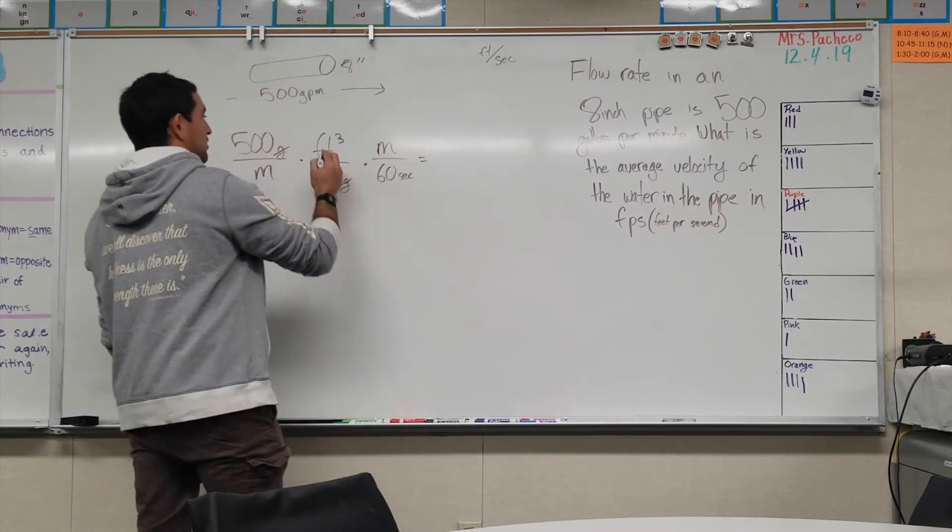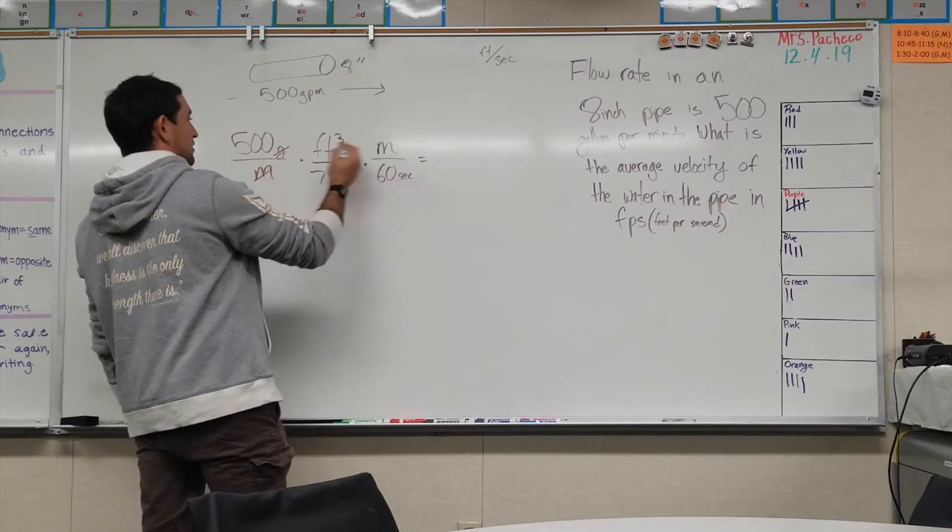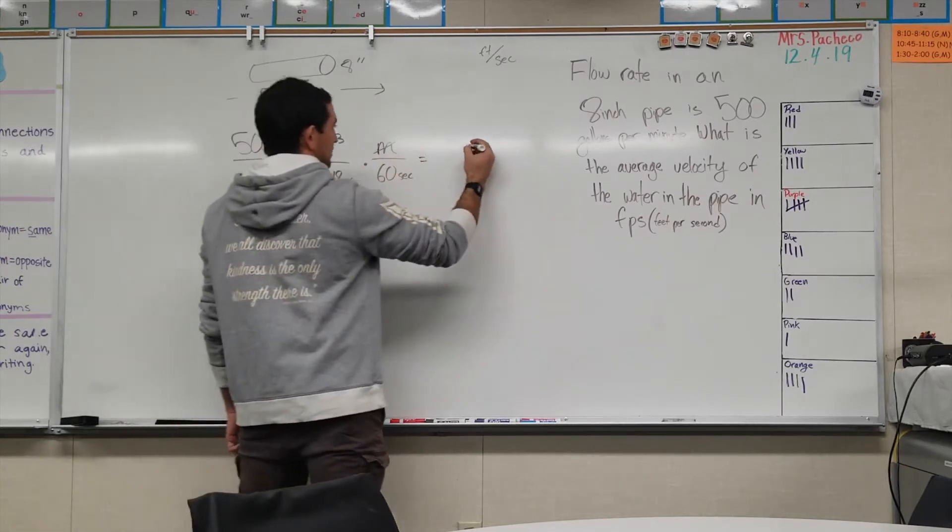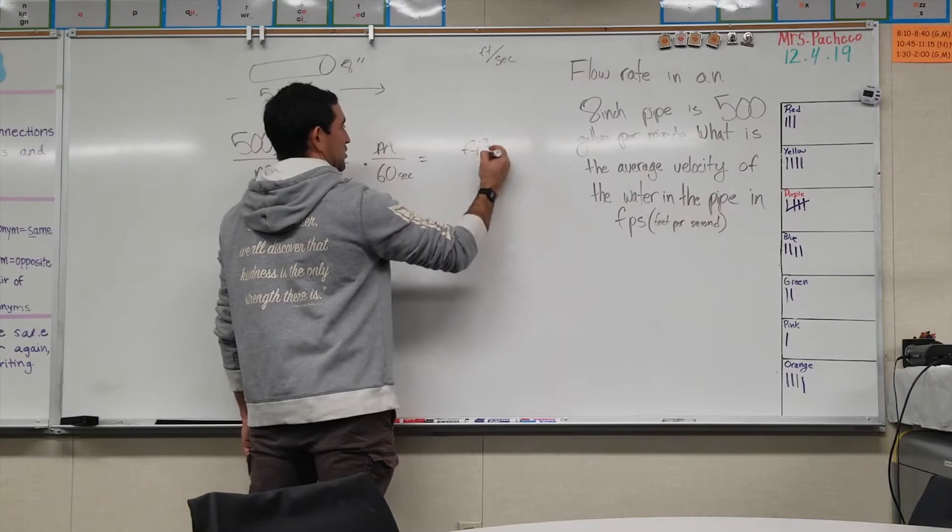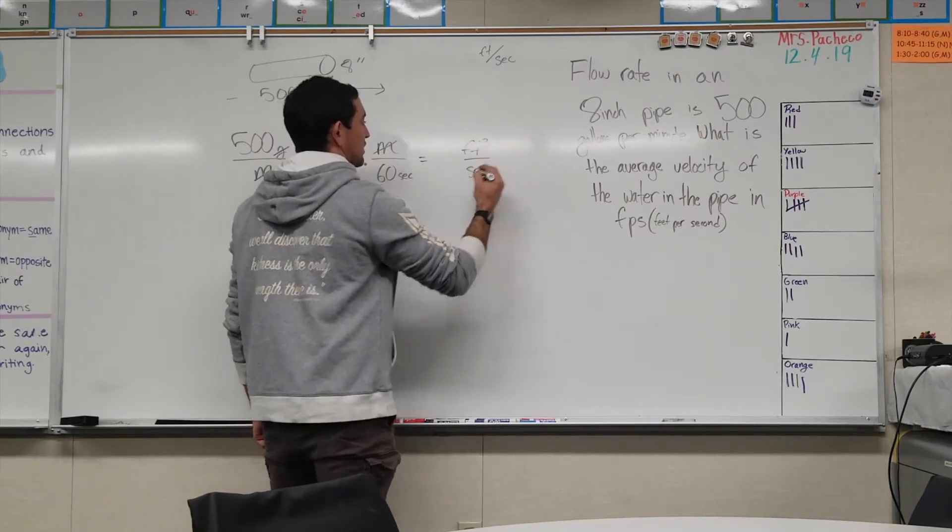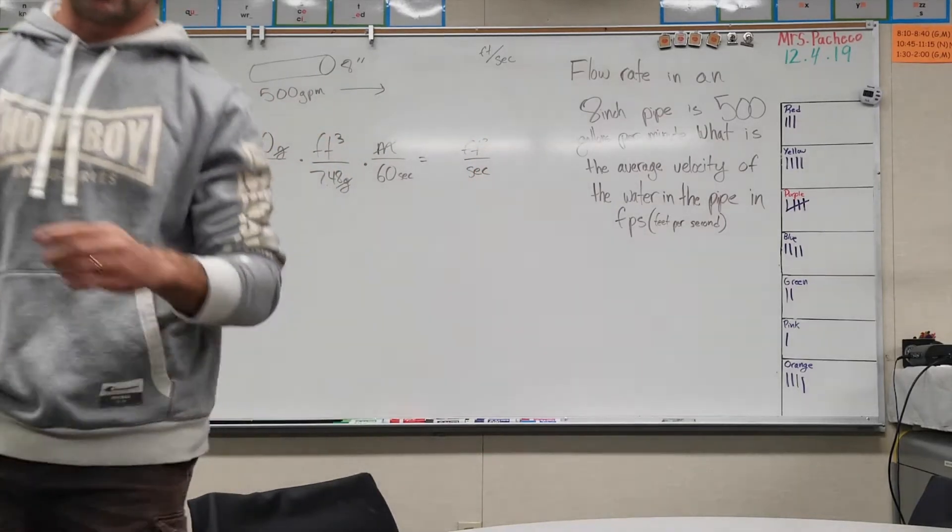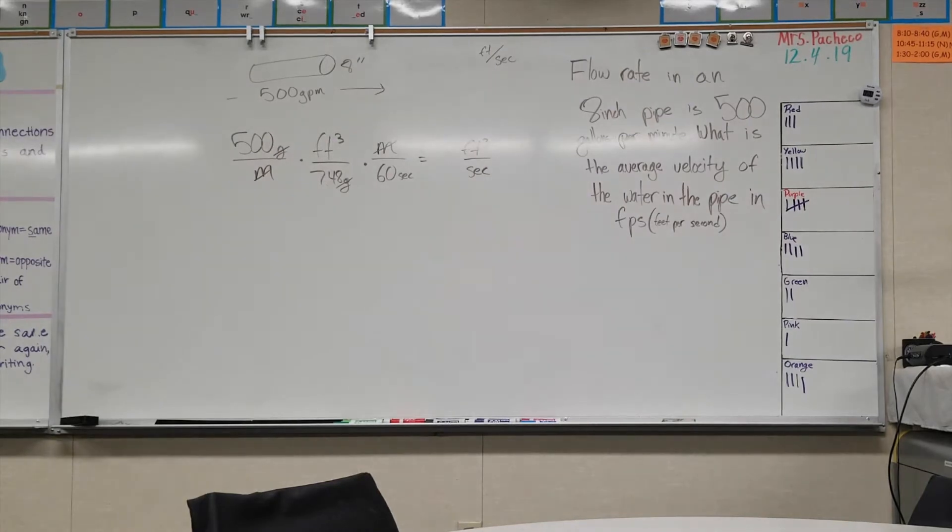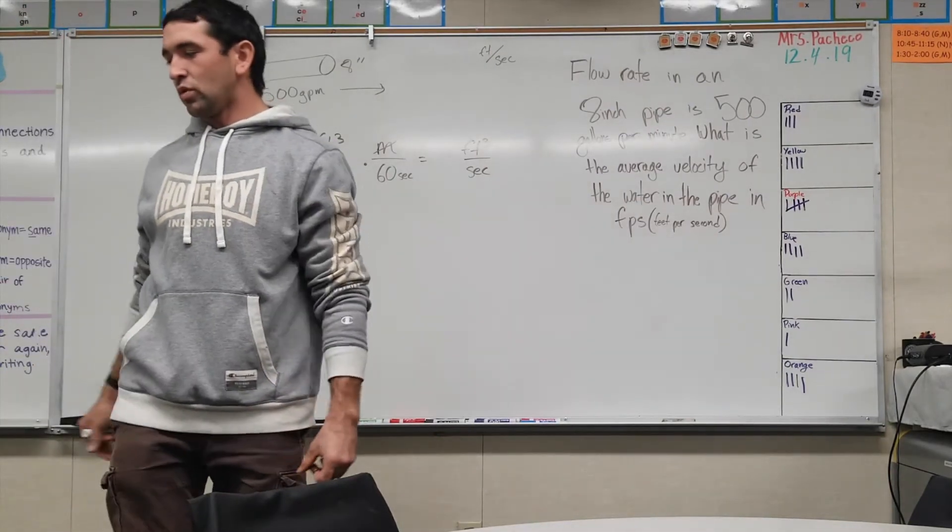For every minute there is 60 seconds, and that will give us cubic feet per second.